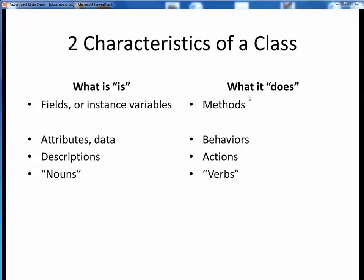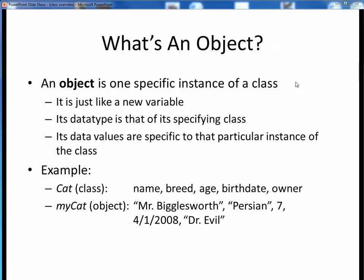These are represented in the software for a class by its fields, or more properly, its instance variables, and its methods. Other terminology that we'll often use interchangeably for this are its attributes, or data, versus its behaviors, or descriptions versus actions, or, to draw a writing analogy, its nouns versus its verbs.